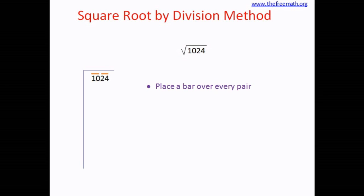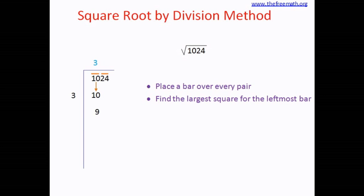The next step is to take the leftmost pair for division. So in this case we take 10 and start dividing it. But the division here is a little different. What we do is we find the largest square number which is smaller than 10. The largest square number smaller than 10 is 9, because 3 times 3 is 9. That means we divide 10 by 3 and we get the answer 3.